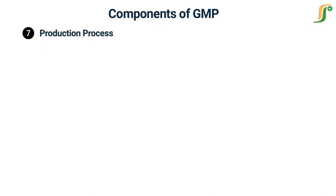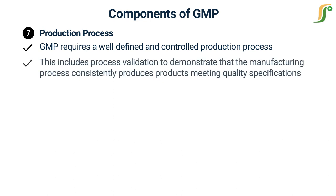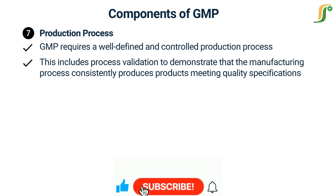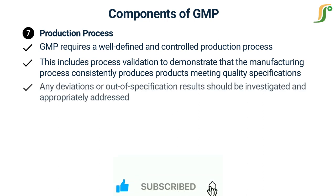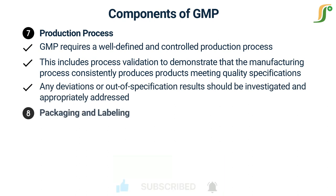The seventh component is Production Process. GMP requires a well-defined and controlled production process. This includes process validation to demonstrate that the manufacturing process consistently produces products meeting predetermined quality specifications. In-process controls should be implemented to monitor critical process parameters and ensure that the process remains within defined limits. Any deviations or out-of-specification results should be investigated and appropriately addressed.